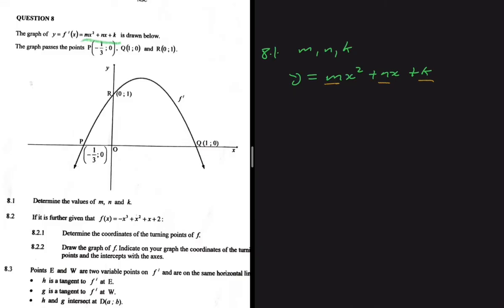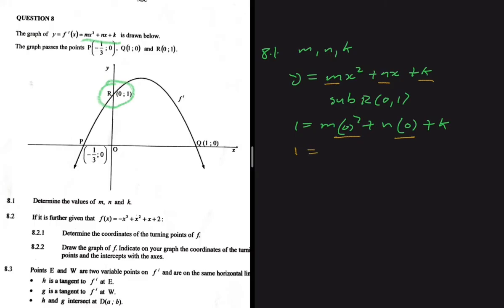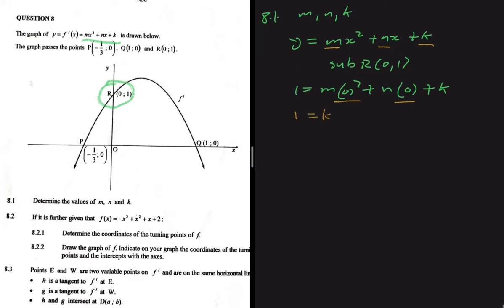The easy way to do this question is to substitute point R first, because R is the y-intercept. When we substitute R, we get: 1 equals m multiplied by x squared — x is zero — plus n multiplied by x — x is zero again — plus k. Since m and n both multiply by zero, they fall away, leaving us with 1 equals k.